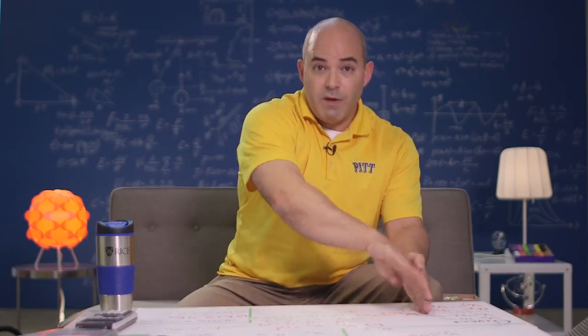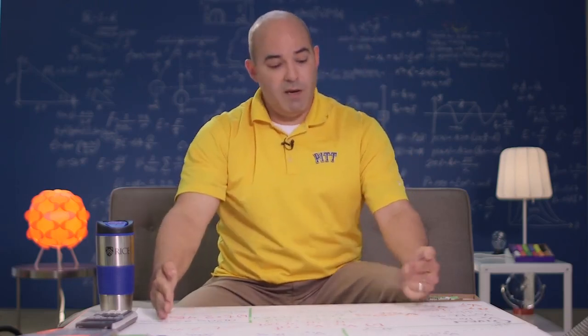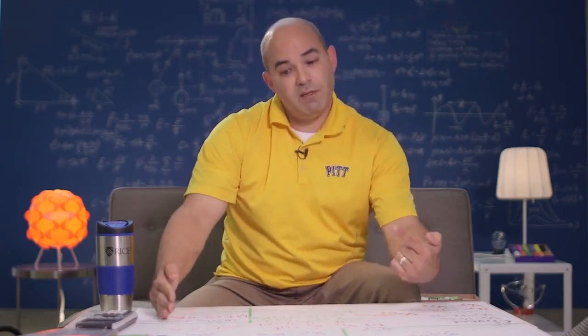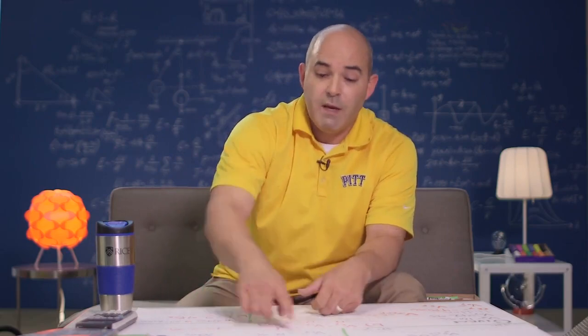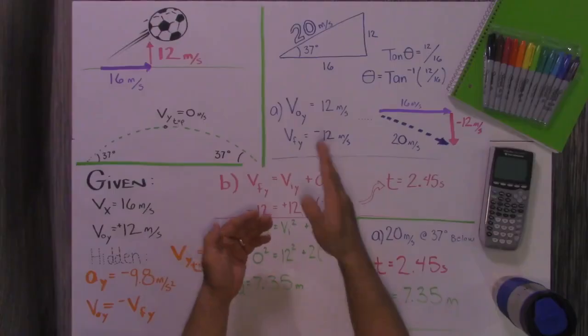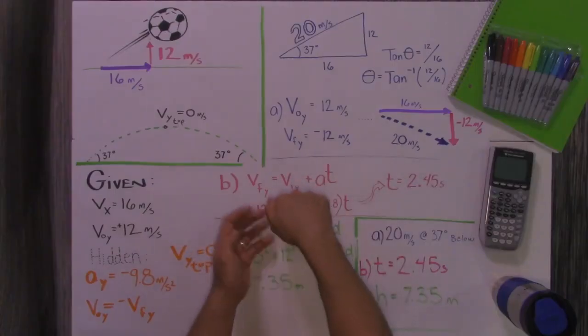Well, since it starts at one height and it ends at the exact same height, whatever its velocity is here when it takes off is the exact same velocity here. The only thing that changed is the angle. So I wanted to show you how I would prove that. Since I know the initial velocity upward was 12 and the final velocity downward was negative 12,